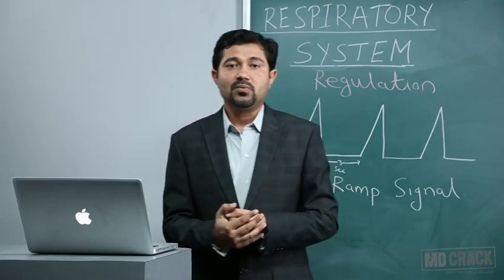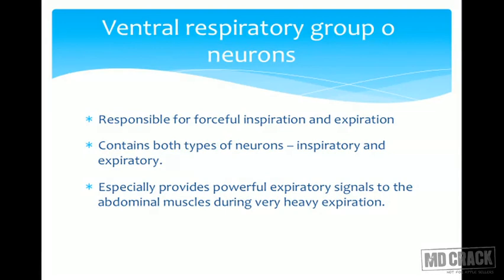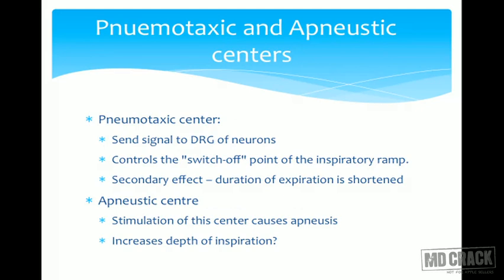Coming to the ventral respiratory group of neurons — it was found that they contain both types of neurons: I-neurons, which are mainly responsible for inspiration, and E-neurons, which send impulses mainly to the forceful expiratory muscles. The ventral respiratory group of neurons comes into action whenever forceful inspiration or expiration is required. They help the dorsal respiratory group of neurons to cause forceful inspiration as well as expiration.